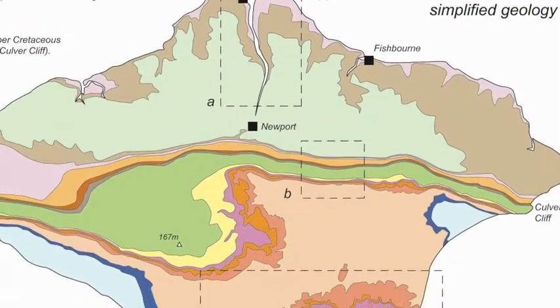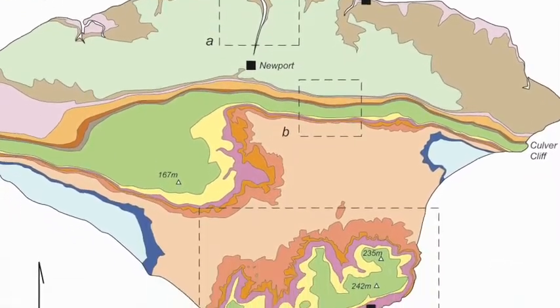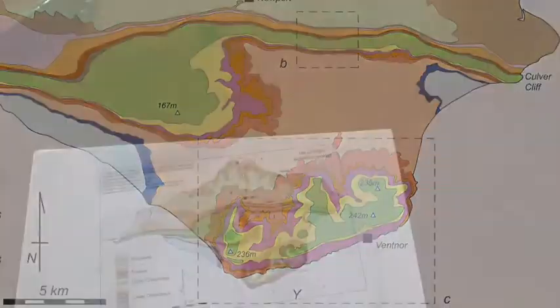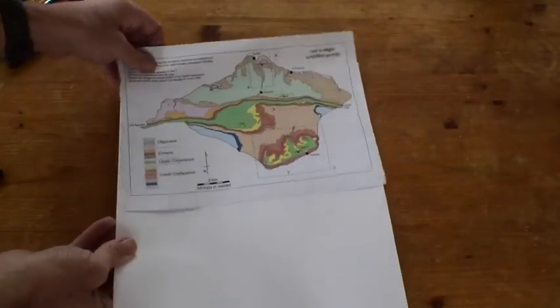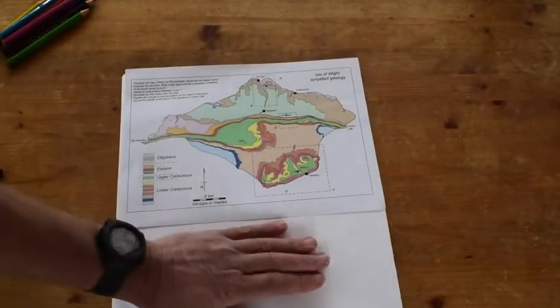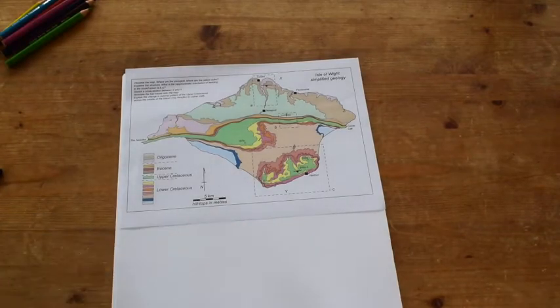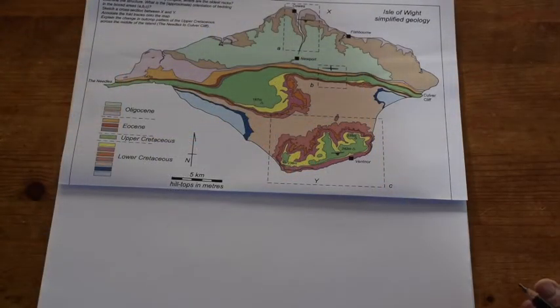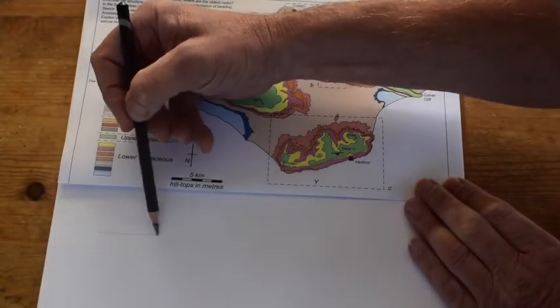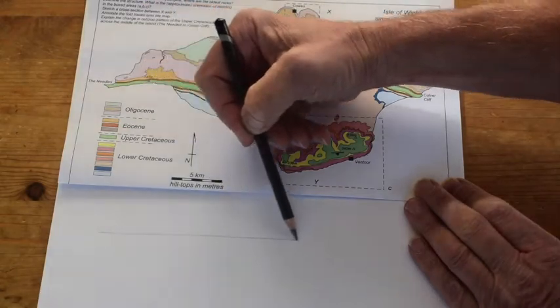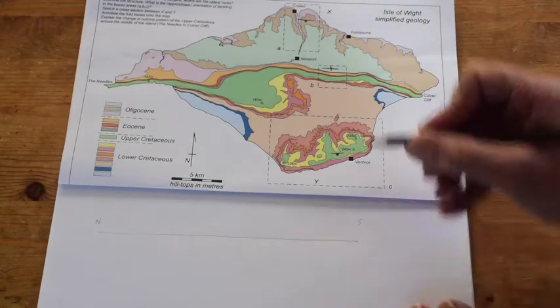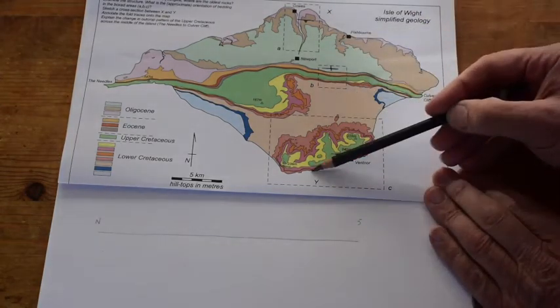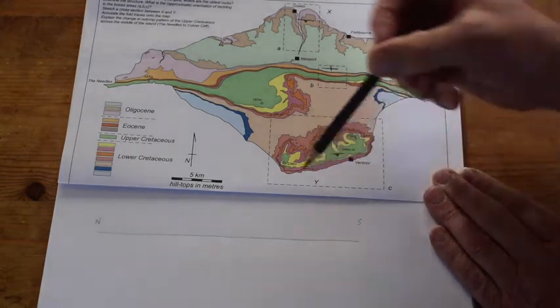Now we need to put this information onto a cross section between X and Y across our map. So let's just rearrange our paperwork. We've got the map at the top and we can draw a cross section down here. Okay, so let's try and draw the cross section through here. We'll have a general section line running from north through here to south.